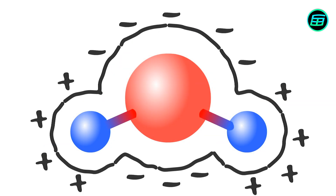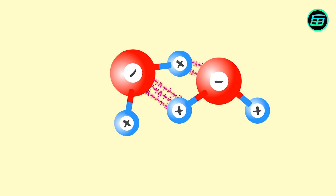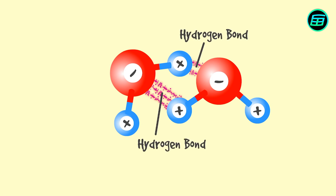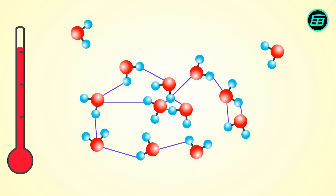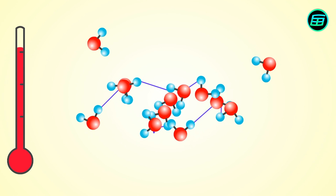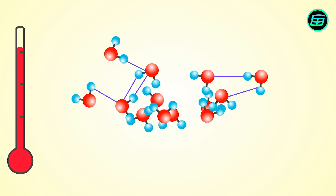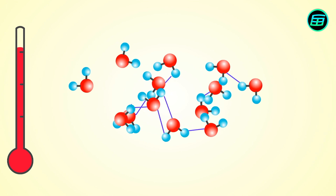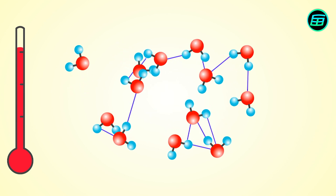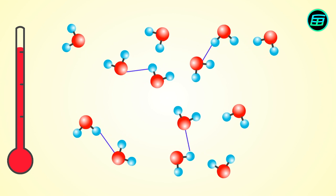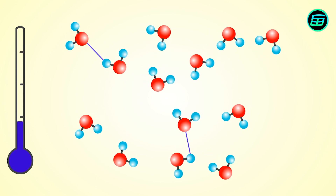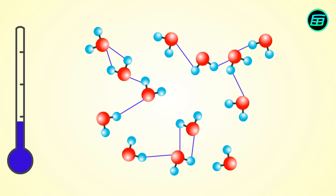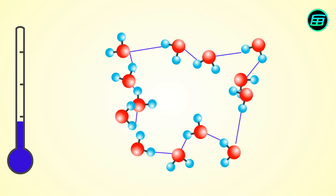This uneven charge distribution means that water molecules interact with each other. This weak interaction is called a hydrogen bond. When the temperature is above 4°C, hydrogen bonds are quickly broken, because water molecules have kinetic energy, meaning the hydrogen bonds are not strong enough to hold the water molecules together. When the temperature drops below 4°C, the water molecules slow down enough to allow the hydrogen bonds to bind each other together.